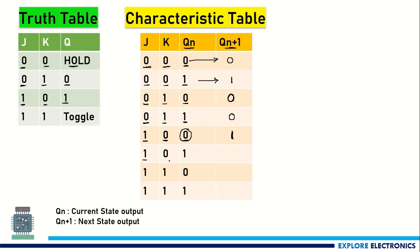And again for J=1, K=0 with 1 as the current state, the next state will be 1 again because J is equal to 1.